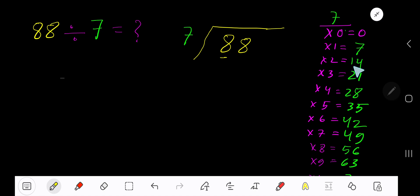2 times 7 is 14, which is greater than 8, so 1 time. 1 times 7 is 7, subtract to get 1, bring down the next digit. 7 goes into 18 how many times? 3 times 7 is 21, which is greater, so 2 times. 2 times 7 is 14, subtract to get 4.